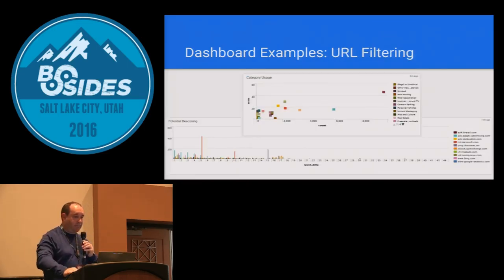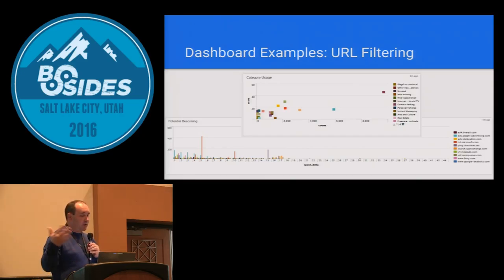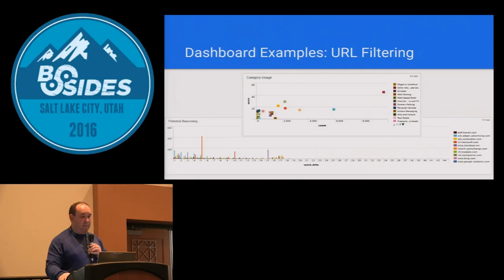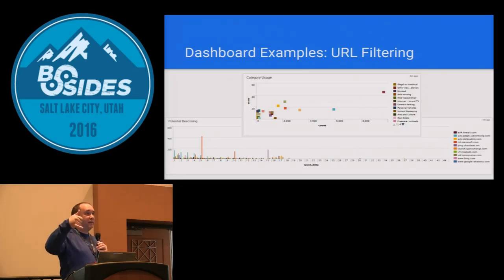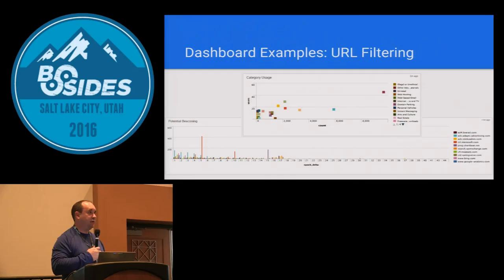Here are a couple more examples — URL filtering logs from different vendors across different data centers, all correlated together. The top one: on the y-axis I've got users, x-axis count — I'm looking for things with high count and very few users, which looks anomalous. The bottom one shows potential beaconing: I'm looking at URL queries, calculating a delta between epoch timestamps, to find something making the same request over and over again. The useful thing is I'm doing this across all of my URL filtering logs, which are from different vendors.